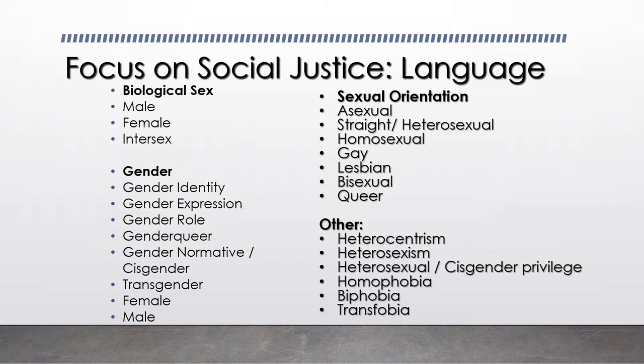To help frame our discussion of sexism and heterosexism, it's important that we differentiate between some key terms and concepts. Biological sex is a medical term which refers to the chromosomal, hormonal, and anatomical characteristics used to classify an individual as female, male, or intersex. Individuals who are intersex have hormonal, anatomical, or chromosomal characteristics of both males and females. In the past they've been referred to as hermaphrodites; however, that's no longer socially acceptable — it's a very derogatory term — so instead we refer to these individuals as intersex.